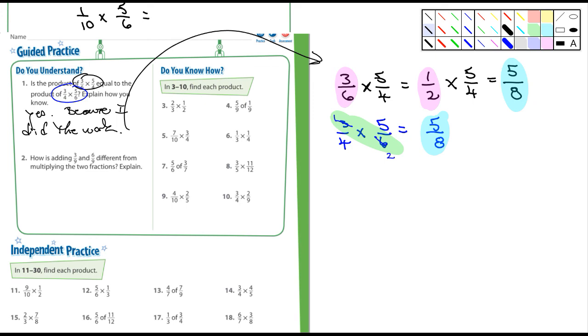How is adding three-ninths and six-ninths different from multiplying the two fractions? Well, okay. So when you're adding and they have the same denominator, you just add the numerators. You guys know that. So they have the same denominator here. So you would just add the numerators and you'd get nine over nine. Multiplying, then you're multiplying the numerators against the numerators and the denominators against the denominators. That's essentially it. So for the rest of these, you guys should be able to do these.